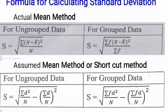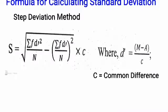The second method is the assumed mean method or shortcut method. The formula is the square root of [sigma D squared divided by n minus (sigma D divided by n) squared], where D equals x minus assumed mean. For grouped data: s equals the square root of [sigma f D squared divided by n minus (sigma f D divided by n) squared]. The third method is the step deviation method, with formula: square root of [sigma f D' squared divided by n minus (sigma f D' divided by n) squared] multiplied by C, where C is the common difference and D' equals (middle value minus assumed mean) divided by C.